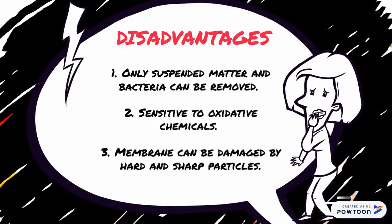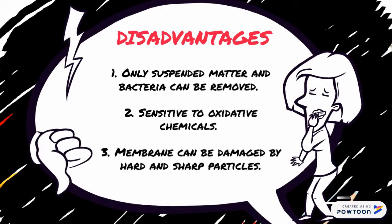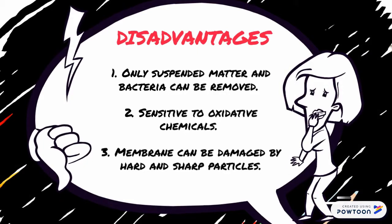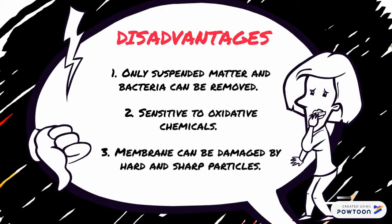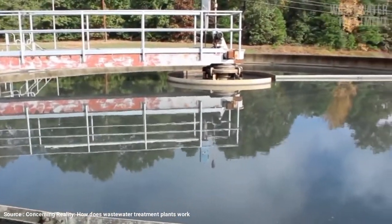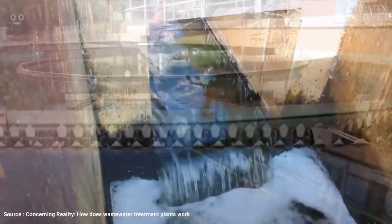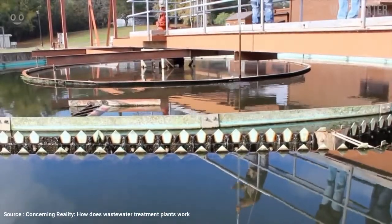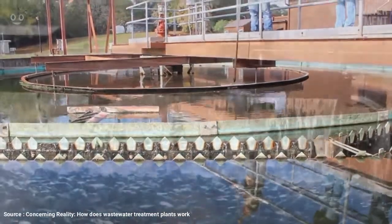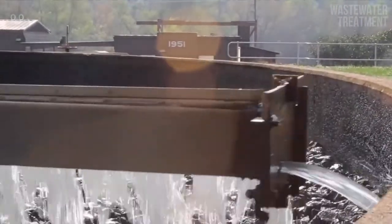On the other hand, there are some disadvantages. Microfiltration is sensitive to oxidative chemicals such as nitric acid, sulfuric acid, and peroxide in high concentrations, which can depolarize membrane potential and destroy the barrier properties. The membrane can also be damaged by hard and sharp particles, so prefiltration is necessary before flowing the solution to the membrane. Additionally, the ability to filter small particles is insufficient for particles sized below 0.02 micrometers — for example, microfiltration cannot remove dissolved substances from a solution.